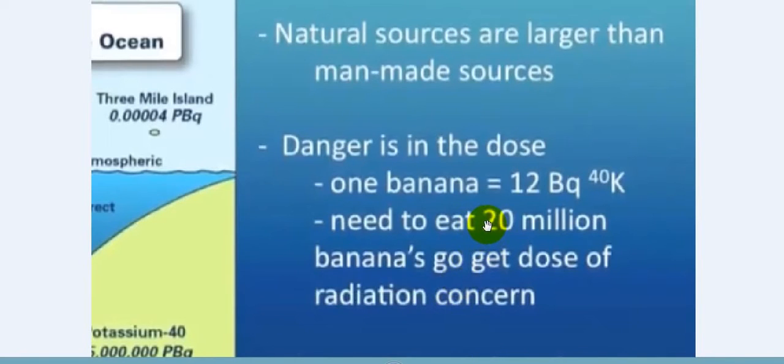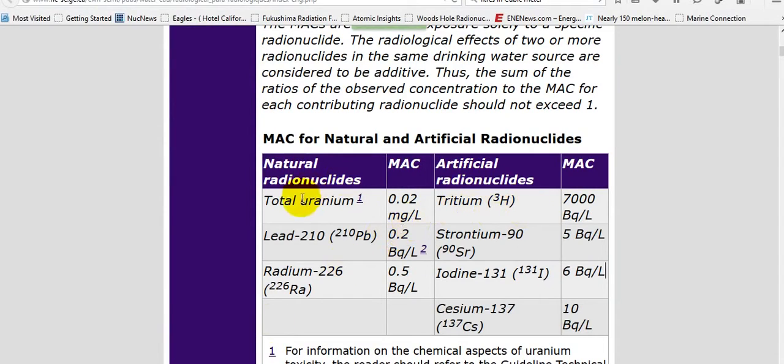They're going to tell you that there's more natural sources that are larger than man-made sources. No, they're not. See the natural sources, natural radionuclides, lead and radium is 0.5 becquerels a liter. These things are 10 becquerels a liter, 6 becquerels a liter, 5 becquerels. 7,000 becquerels a liter man-made versus all of them still don't even have a comparison.